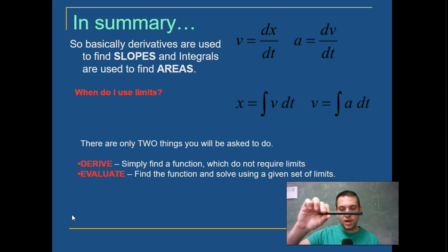So with this shape starting from 0 to all the way to L, if this were a rod and had a length of L, all the way from 0 to L, or all the way from 0 to half L, or whatever shape you are trying to add up the tiny little pieces of. That's what we're doing. There's only going to be two things you're going to be asked to do. Derive, simply find a function which do not require limits, and evaluate the function and solve using a given set of limits.